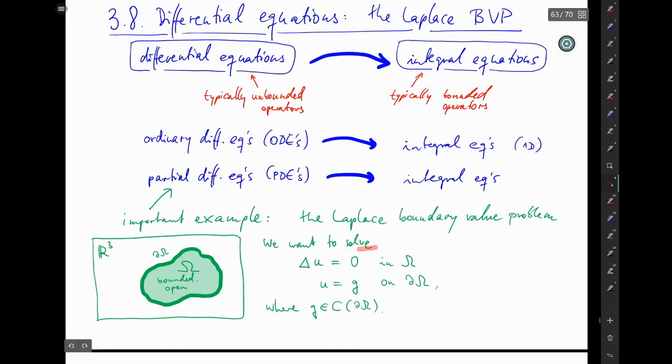Solving this problem means you have to find the solution u. u should be two times continuously differentiable inside Omega because you want to compute these second derivatives here. It should also be continuous on the closure of Omega, which is Omega together with its boundary ∂Ω, because only then does it make sense to talk about the value or limit of u at the boundary and expect it to be equal to g. This is called the Laplace equation, and if it comes with this boundary condition, you call it the Laplace boundary value problem.